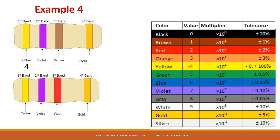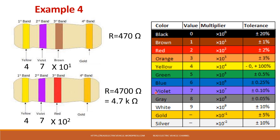In the next example, the first band is yellow — value 4 — and the next is violet — value 7. The third band is brown, so you multiply by 10. That gives 470 ohms. For the next resistor, the same yellow-violet gives 47, and the multiplier is red, meaning multiply by 100. So the value is 4700 ohms, which can be written as 4.7 kilo ohms.